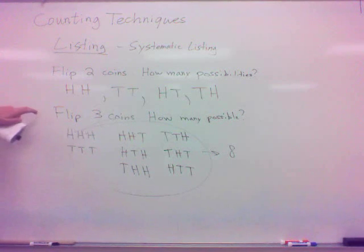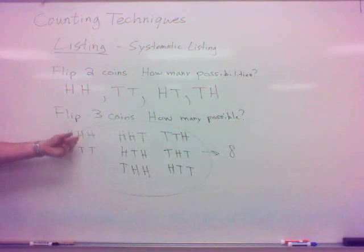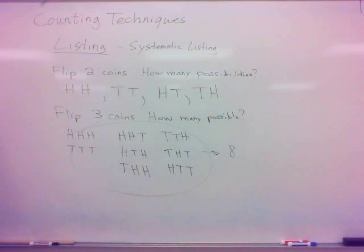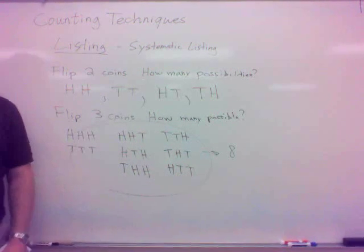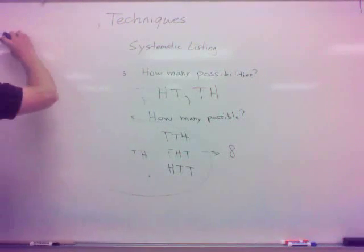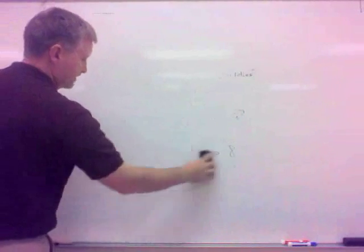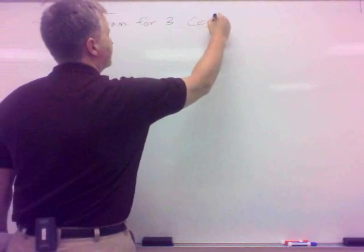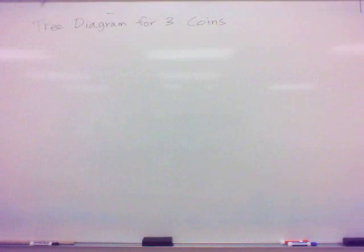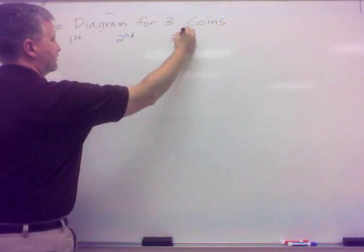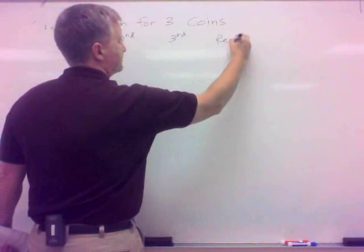All right, now let me mention here something else that the book might mention somewhere along the way. Let's do this same listing. You know, our system was we did the three heads, the three tails, and then we did the two heads and one tail, and then we did the two tails and one head. That was kind of our system there. Well, there's also another system that can be utilized. Let me show you the three coins, the tree diagram for three coins. It's called a tree diagram. You'll see why that's called that in just a second.